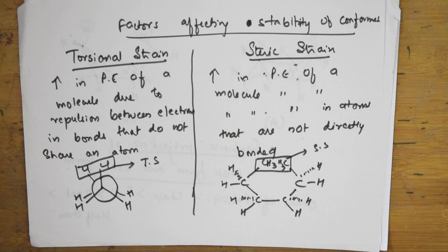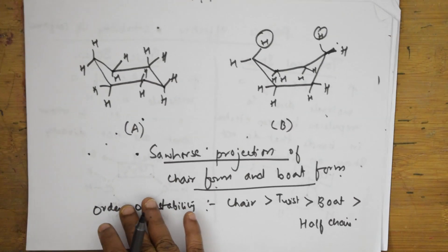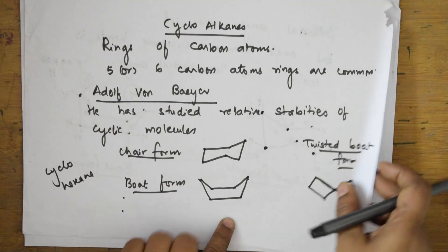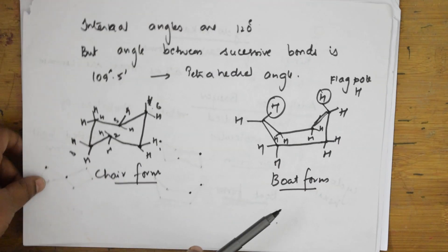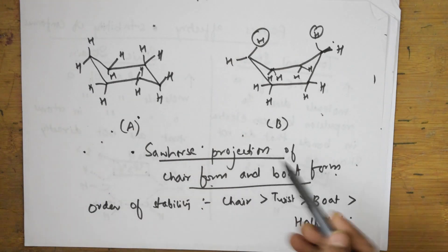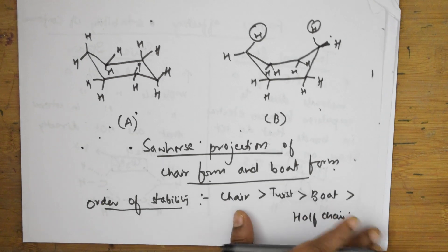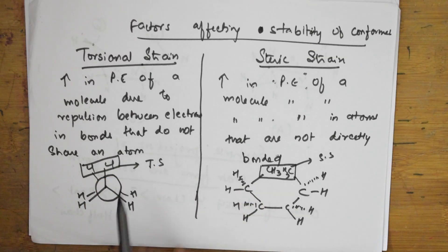So these are the conformations of cycloalkanes. I have explained the chair form, boat form, and twisted boat form. I gave the angles between them, showed how to represent chair and boat forms, showed the sawhorse projections, gave the order of stability, and explained the factors — torsional strain and steric strain — affecting that stability.